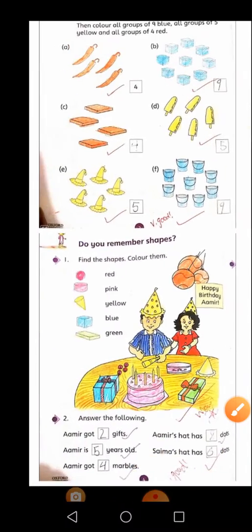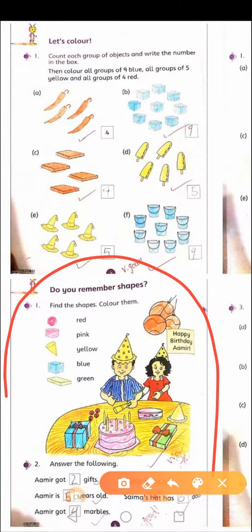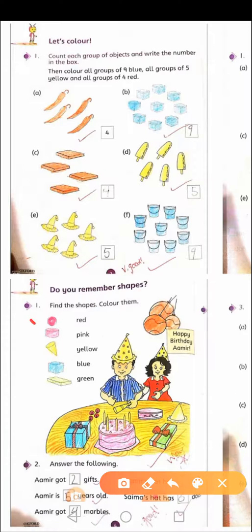Here comes the next page. On this page they have revised the concept of shapes and colors. They ask to find the shapes and color them according to a color code: all circles should be red, the sphere...